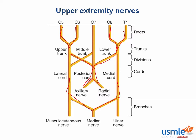Let's go through it formally, starting with the nerve roots: C5, C6, C7, C8, and T1. Keep in mind that although there are cervical nerves one through eight, there are actually only seven cervical vertebrae. The C8 nerve comes out below the C7 vertebra. All the other cervical nerve roots come out above their vertebrae.